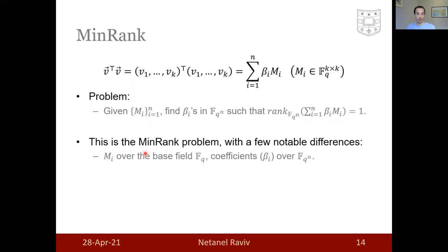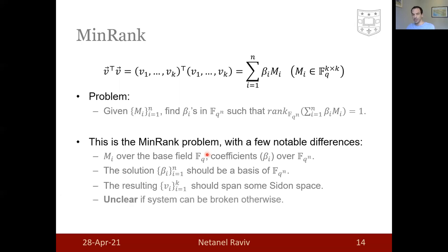This is a min rank problem with a few notable differences. Those M_i's are over the base field where the coefficients are over the extension field. Normally, in min rank, these are the same field. The solution beta_i should be a basis to an extension field and the resulting V_i should span some Sidon space. It is unclear to us what can be done if this system is solved and the solution does not satisfy these requirements. Nevertheless, we focus on finding any solution, not necessarily which satisfies these extra conditions.